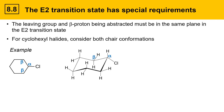If that's not clear, build a model and look down the bond between the alpha and the beta position. You'll see the dihedral angle between the chlorine and each of these protons in the beta position is 60 degrees, not 180 degrees as it needs to be. The other beta position closest to us has the same problem — those hydrogens are similarly not coplanar with the chlorine.